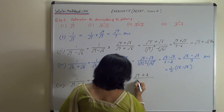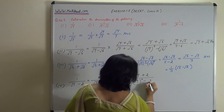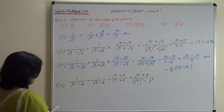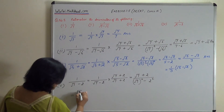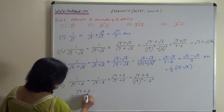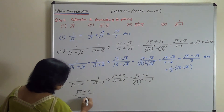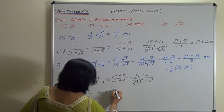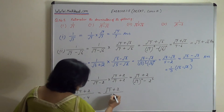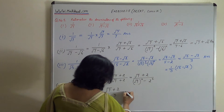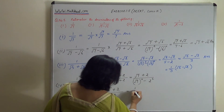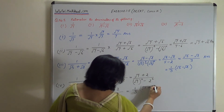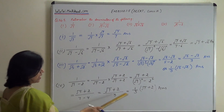Denominator में (a minus b)(a plus b) = a squared minus b squared. तो root 7 squared minus 2 squared = 7 minus 4 = 3. So the answer is root 7 plus 2 upon 3. आगे चाहें तो 1 upon 3 into root 7 plus 2 भी लिख सकते हैं।